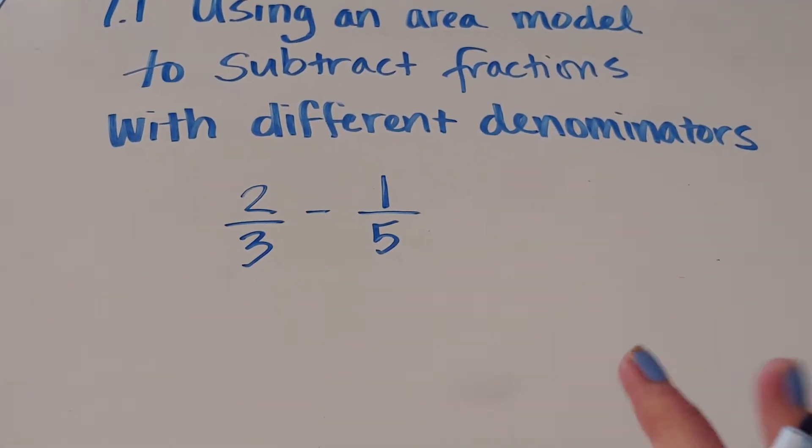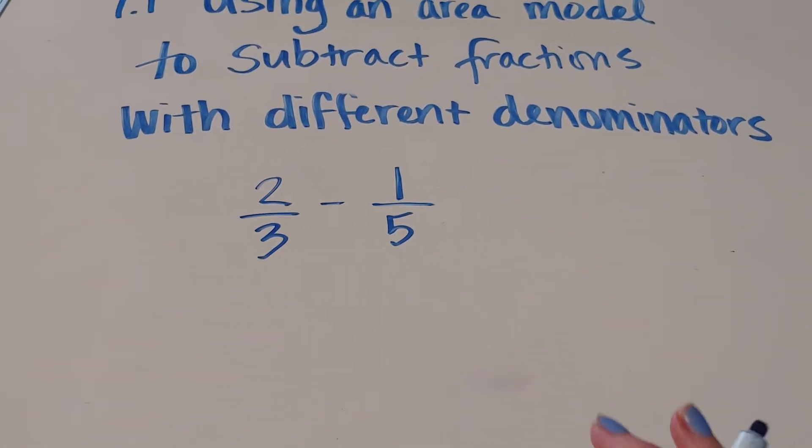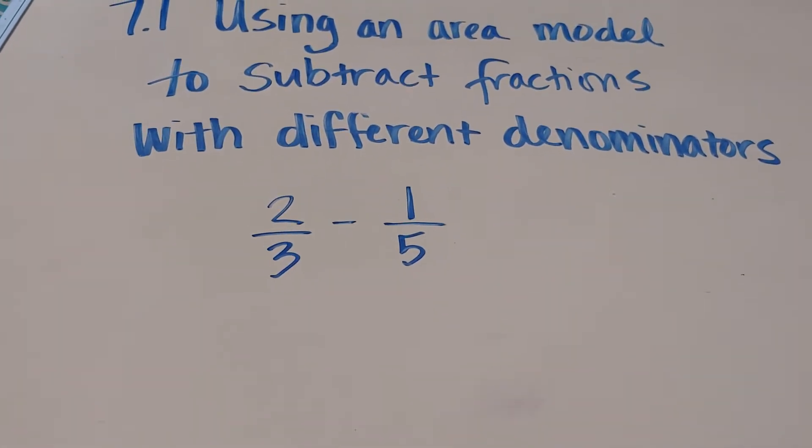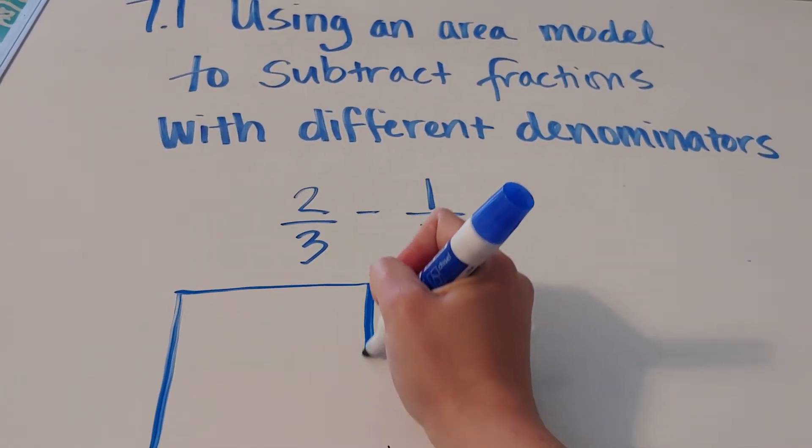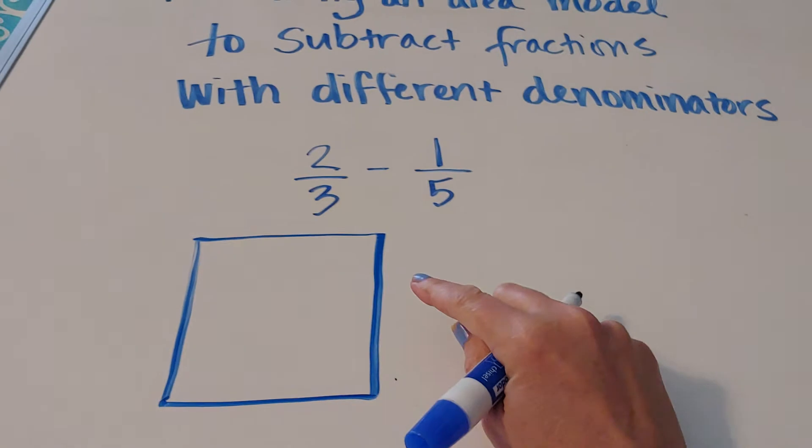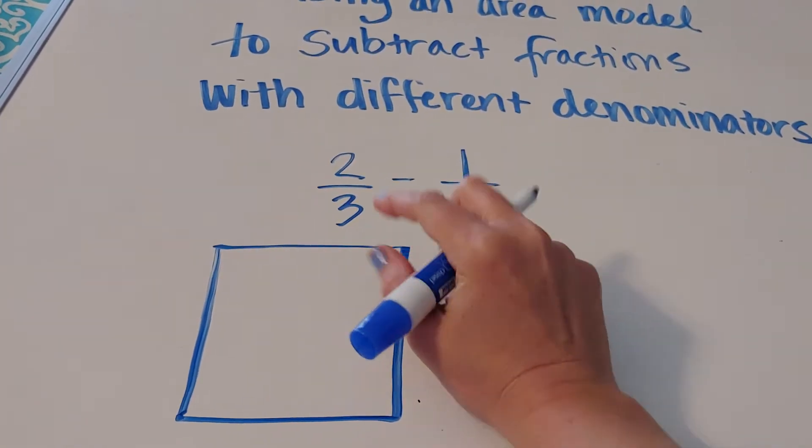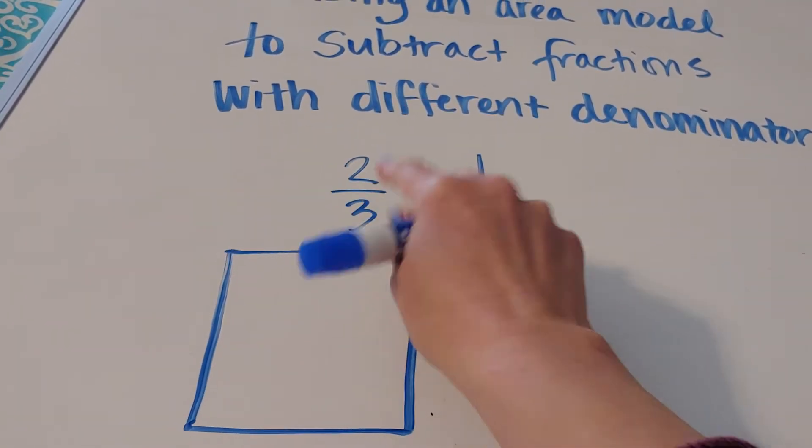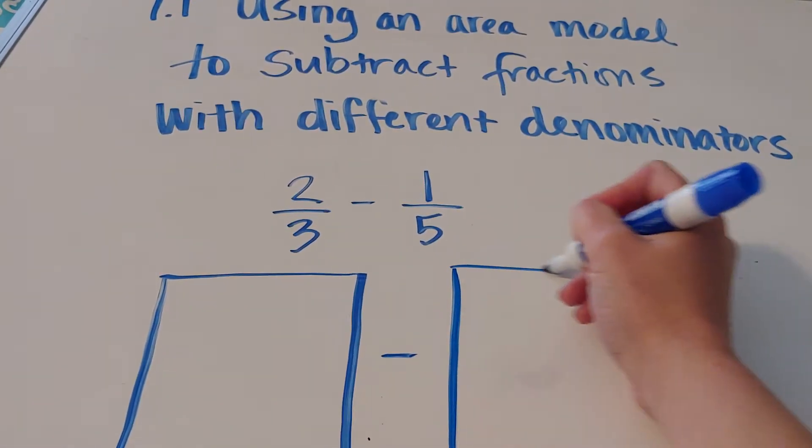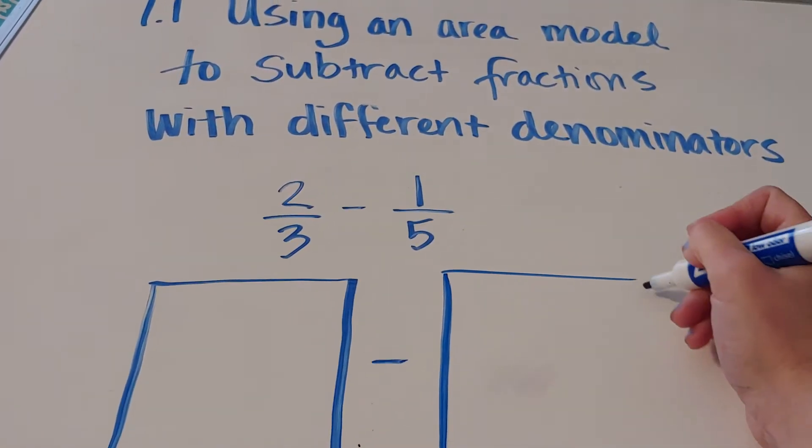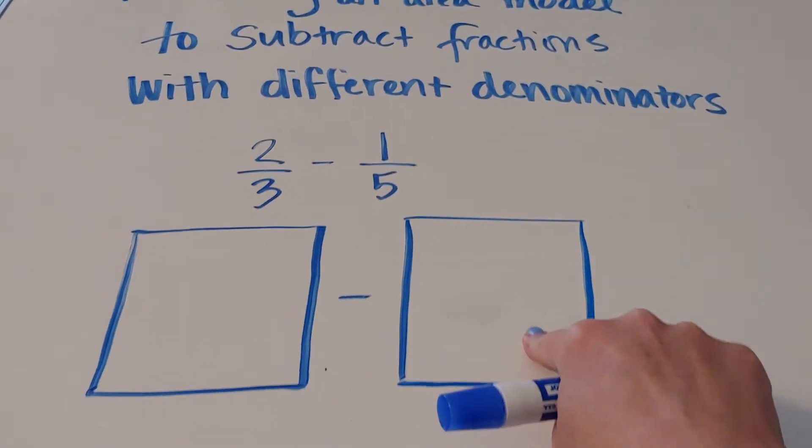So our approach is the same way, which is why I say watch the adding fractions video first. What we're going to do is have a rectangle that represents this two thirds. We're going to shade two thirds of this rectangle to represent this. Then we're going to take away one fifth. So we're going to shade this rectangle to represent one fifth.